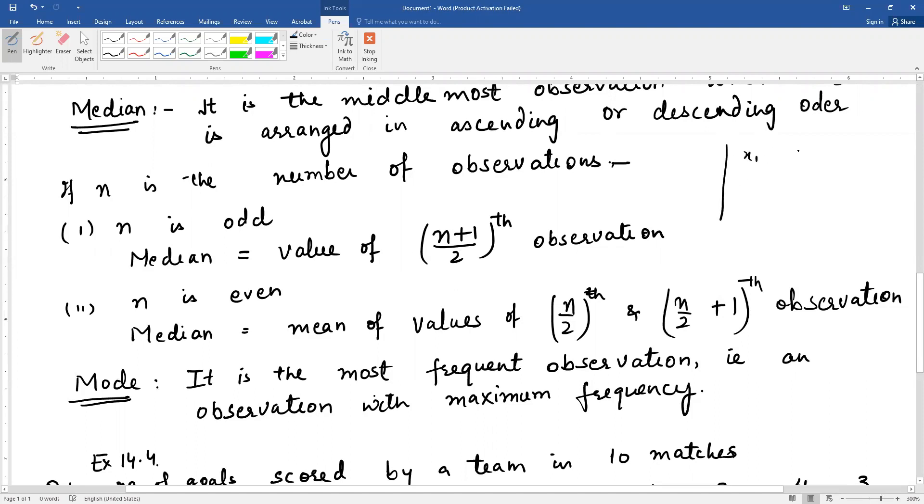See, if suppose there are x1, x2, x3, x4, x5, these are 5 observations. Then what will be the middlemost? 5 plus 1 by 2, that is 6 by 2, that is the third observation. That will be the middlemost. Right?